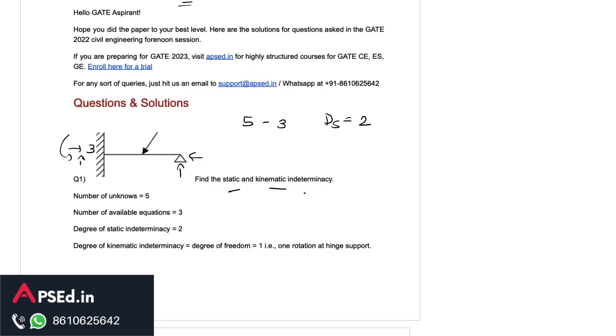If we talk about kinematic indeterminacy, kinematic indeterminacy gives the degree of freedom. We know that in this structure only one movement is possible that is the rotation at this hinge. So that is the only degree of freedom here. So it becomes one. So kinematic indeterminacy is one here.